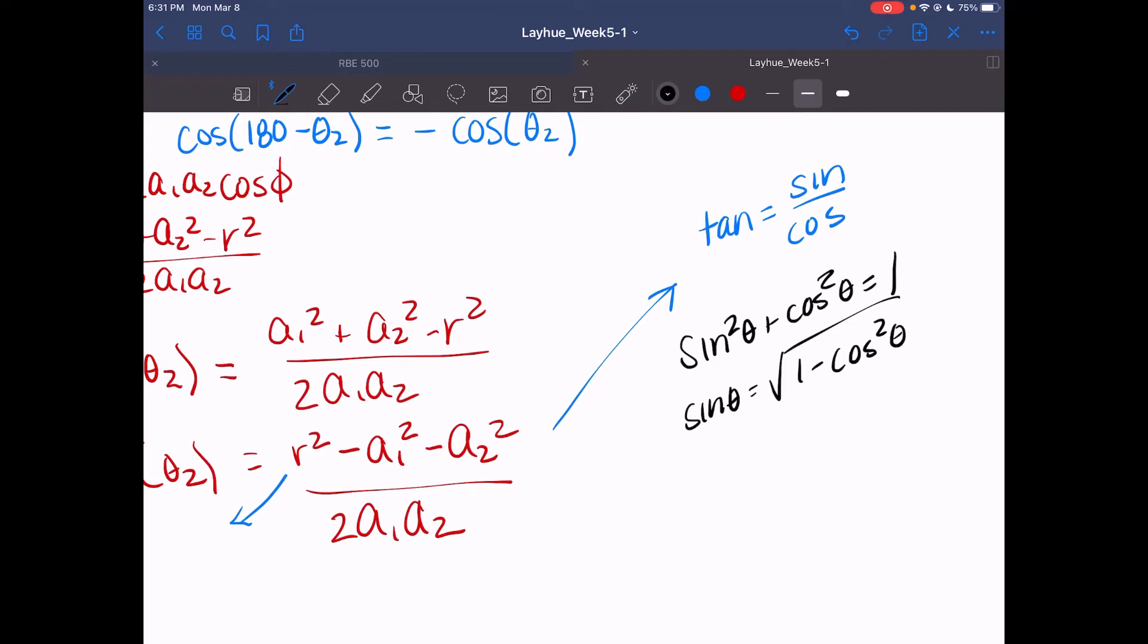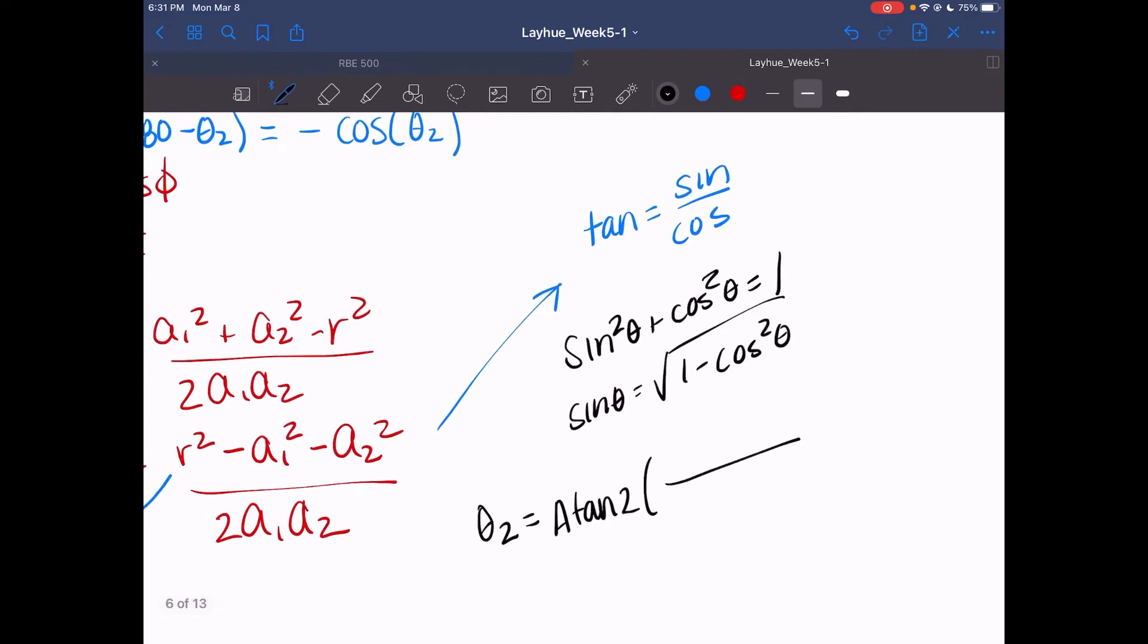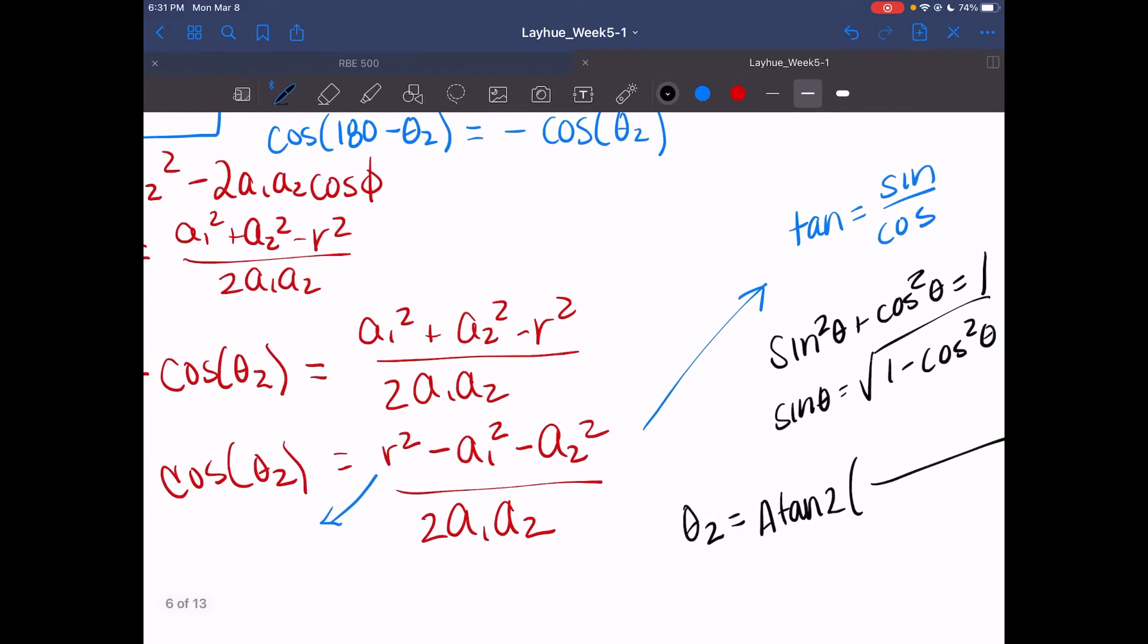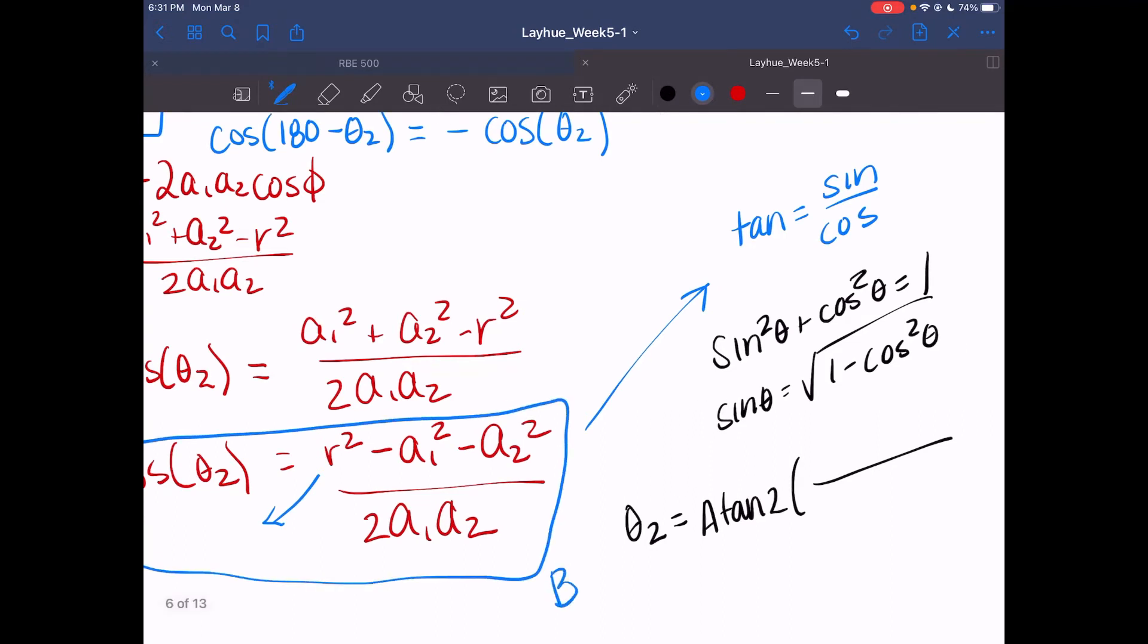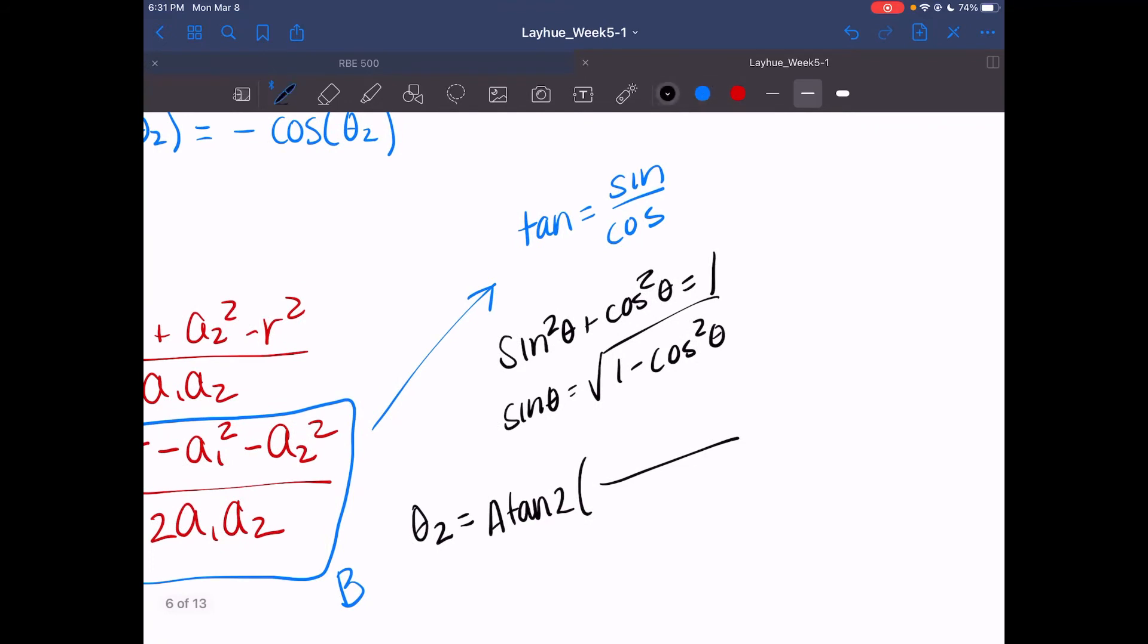We can get that sine of an angle is equal to the square root of 1 minus cosine squared of an angle. Then we can get our atan for theta2. We can simplify this, and we will denote this entire cosine term as one term, b. And we can get our final term of theta2 equals atan2 of the square root of 1 minus b squared all over b.